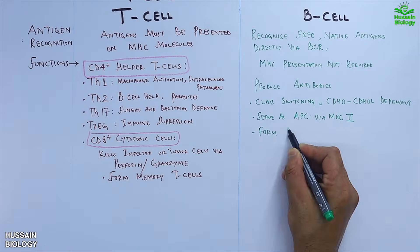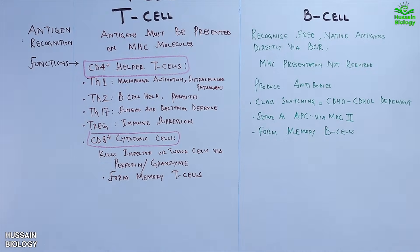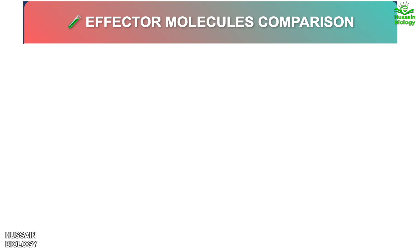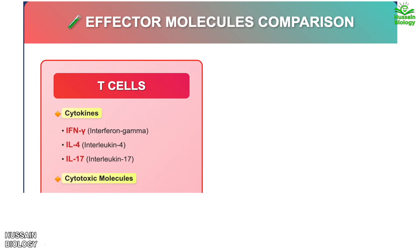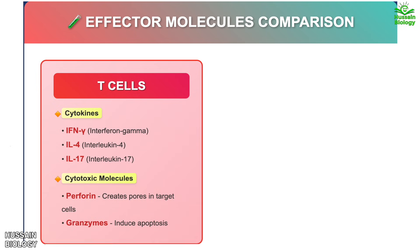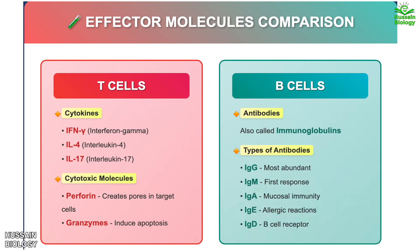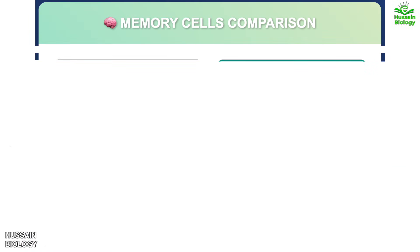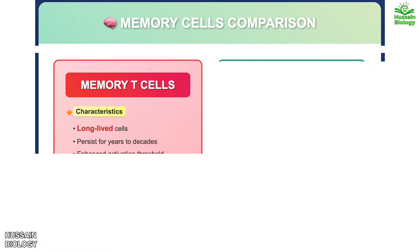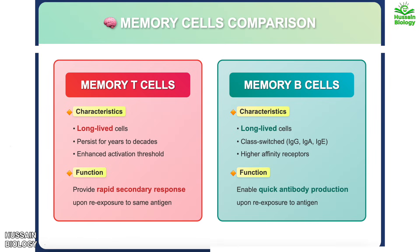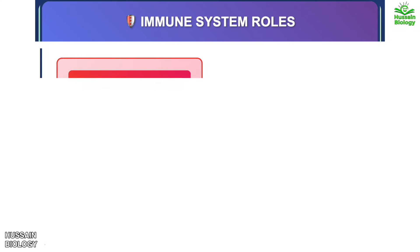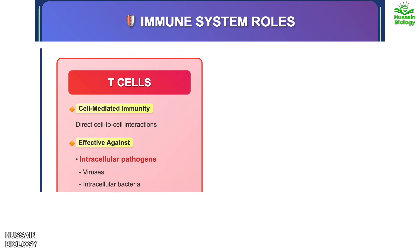Comparing effector molecules: T-cells use cytokines like IFN-gamma, IL-4, and IL-17, as well as perforin and granzymes for killing. B-cells produce antibodies. Regarding memory cells, memory T-cells are long-lived and provide a rapid secondary response, whereas memory B-cells enable quick antibody production upon re-exposure.